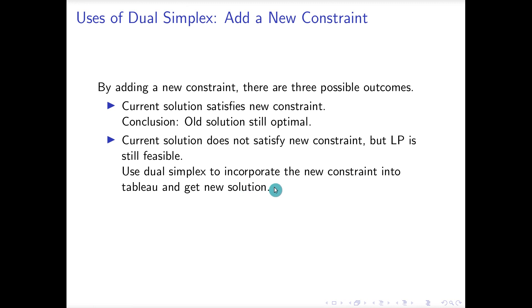Okay, and so we got our new solution. What's the third possibility? Have you decided what happens if the new constraint makes the entire set infeasible? If the current solution does not satisfy the new constraint, then the new LP becomes infeasible.